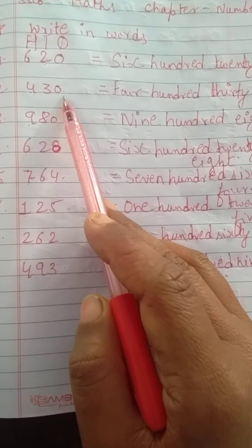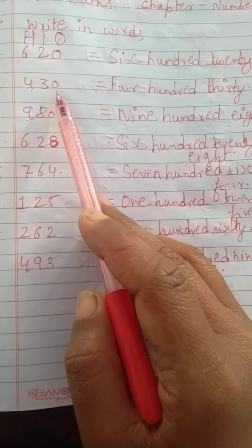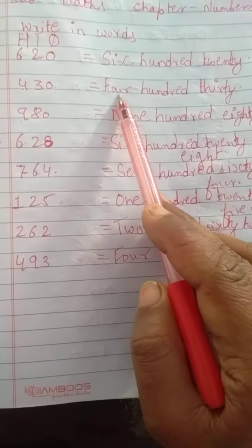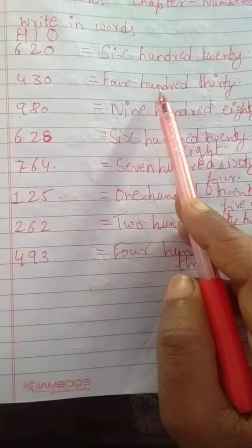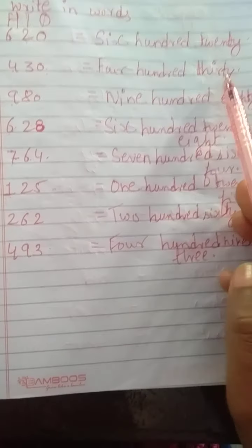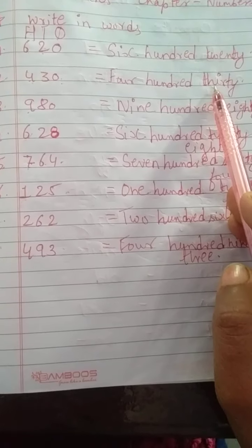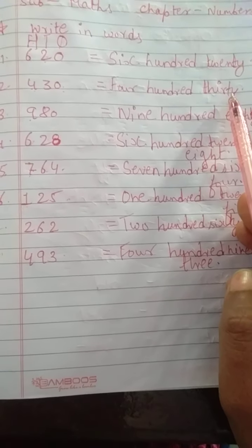Next is 430. So, we have to revise once again. 430. F-O-U-R 4 H-U-N-D-R-E-D 100 and the spelling of 30 is T-H-I-R-T-Y, ok.